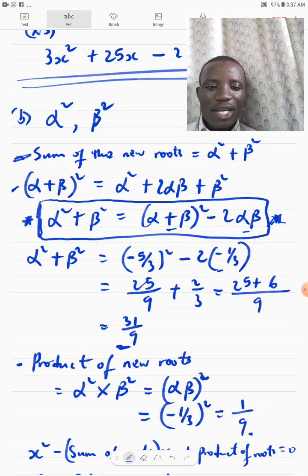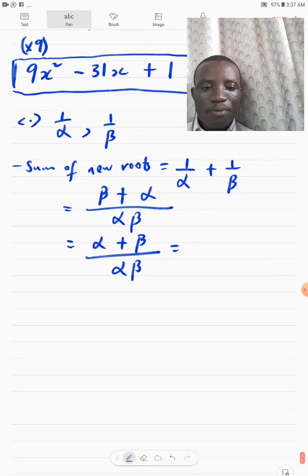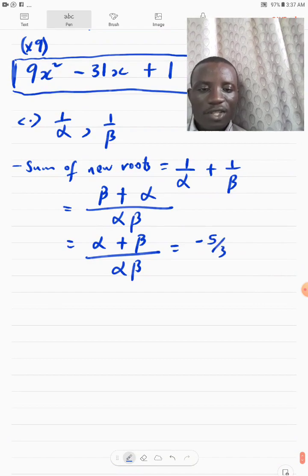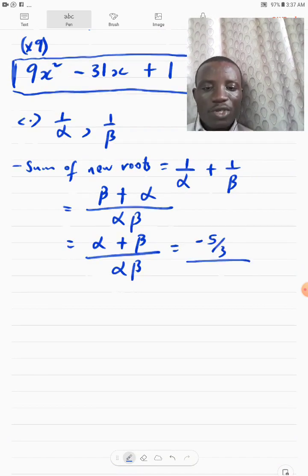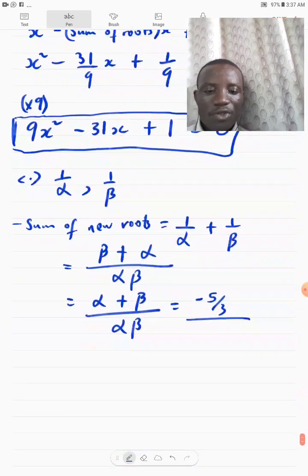So, alpha plus beta is minus 5 over 3. So, let's just put it. That will be minus 5 over 3 over. What is our alpha beta? Our alpha beta also is being used. That's minus 1 over 3. So, let's put that there. Minus 1 over 3.